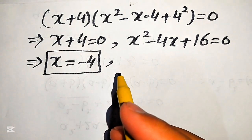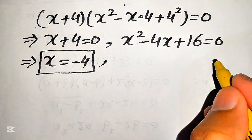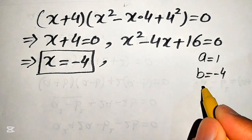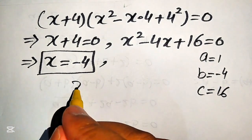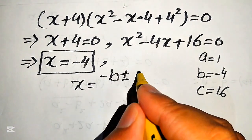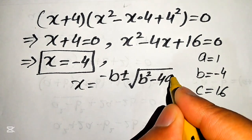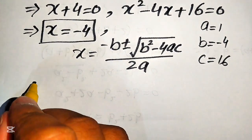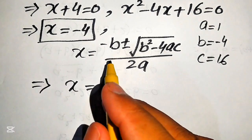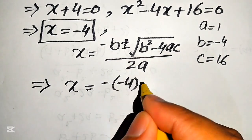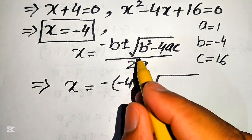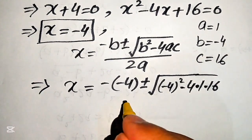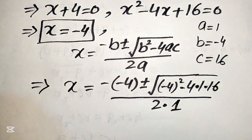To find the last two roots we solve the quadratic equation x squared minus 4x plus 16 equals to 0 using the quadratic formula. The coefficients are a equals to 1, b equals to minus 4, and c equals to 16. The quadratic formula gives x equals minus b plus minus square root of b squared minus 4ac divided by 2a.